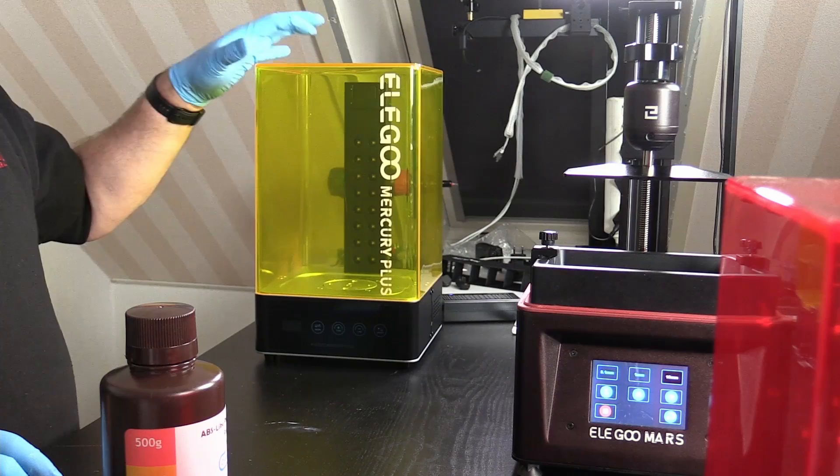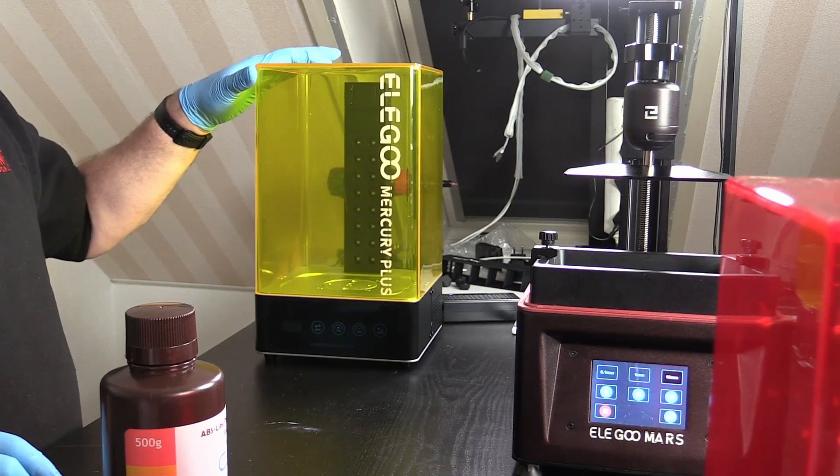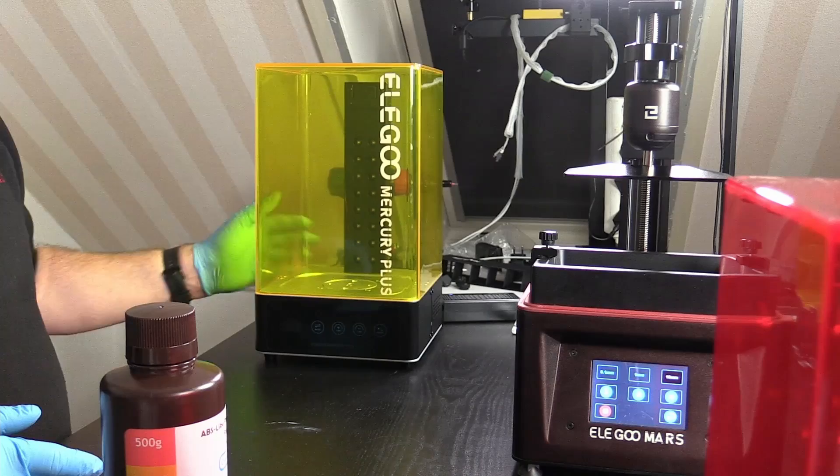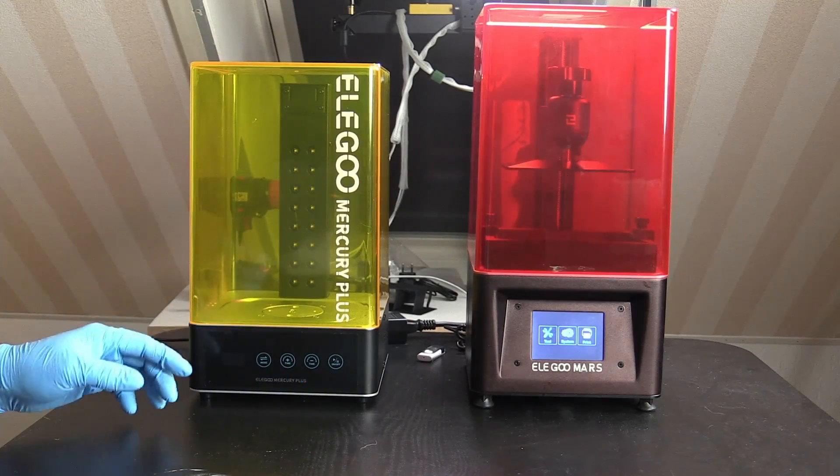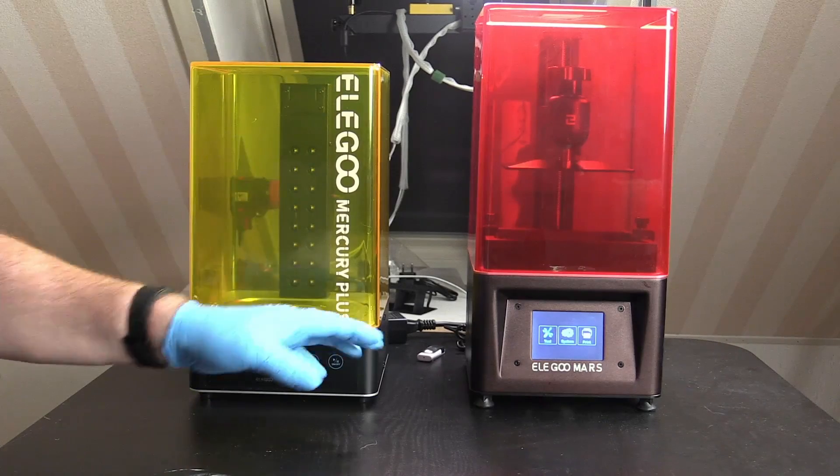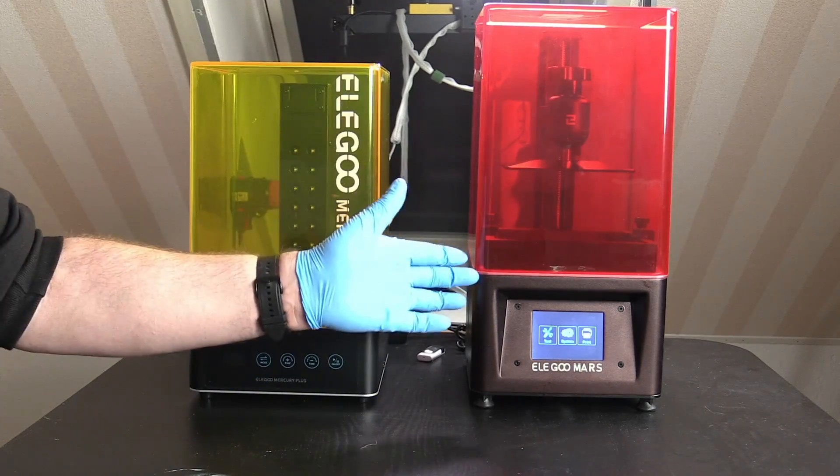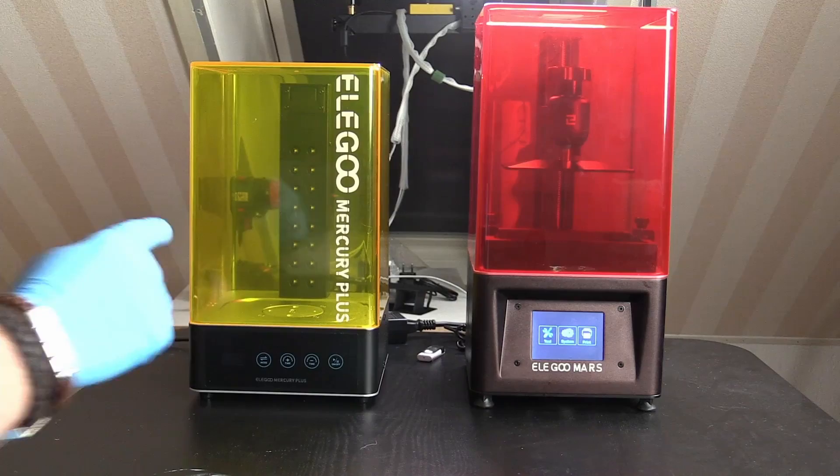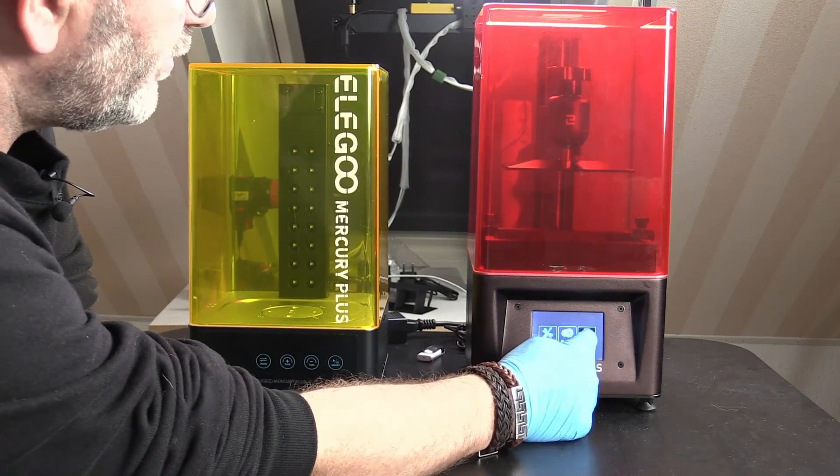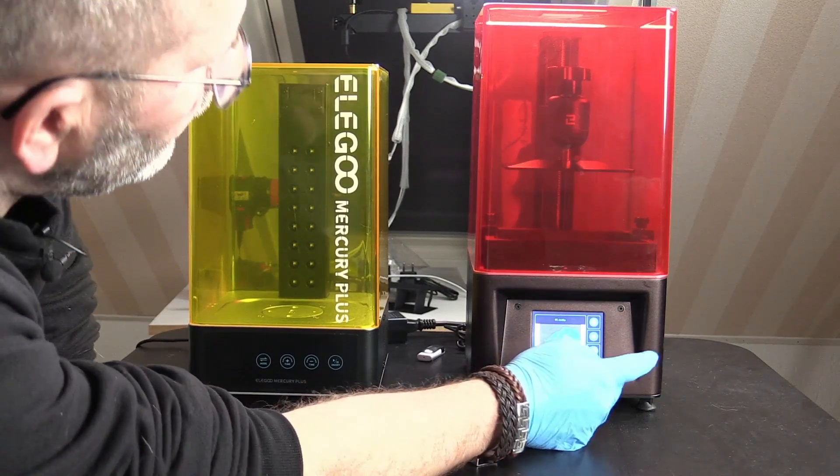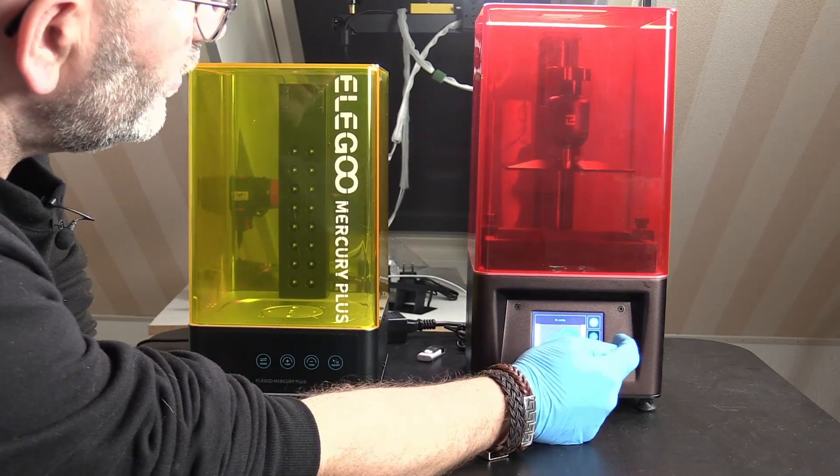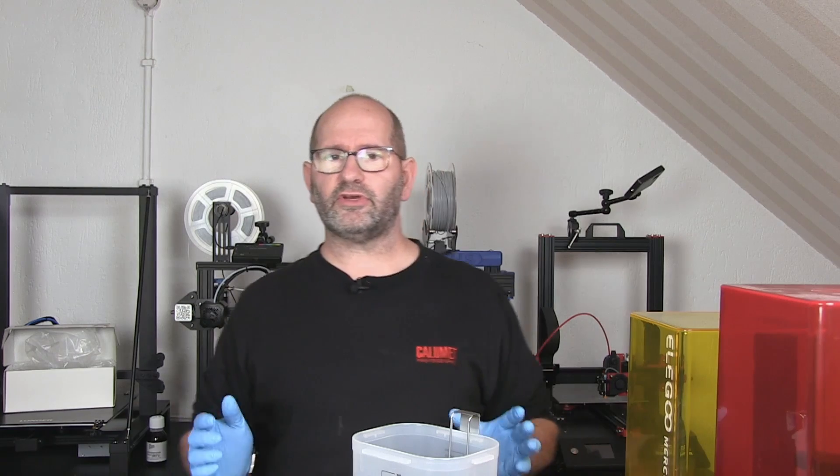This is the cleaning station and curing station because it's both for this printer. Here you can see them both. This is the curing station which is new and this is the Elegoo Mars, and I'm now going to start my print on the Elegoo Mars.